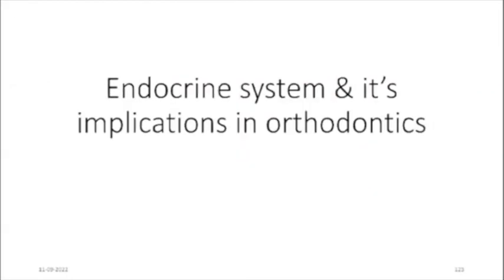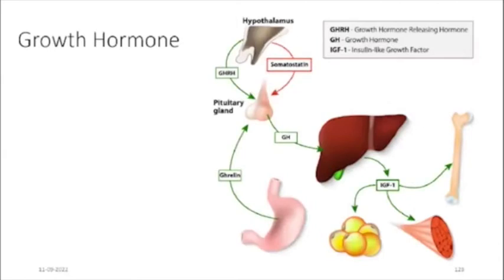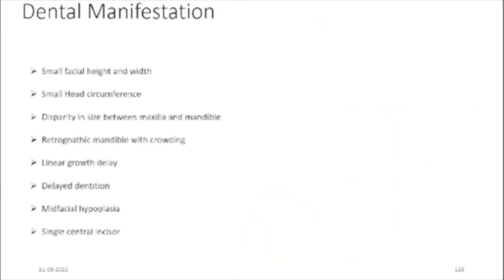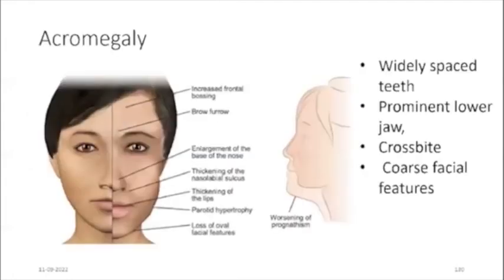Moving on to the endocrine system and its implications in orthodontics, starting with growth hormone. The hypothalamus stimulates the pituitary gland to release growth hormone, which acts like a growth factor initiating responses in bone-forming cells, muscle-forming cells, and fat-forming cells. Growth hormone releasing hormone from the stomach also regulates the pituitary gland to release growth hormone. Dental manifestations include small facial height and width, small head circumference, disparity in size between the maxilla and mandible, retrognathic mandible with crowding, linear growth delay, delayed dentition, midfacial hypoplasia, and single central incisors.